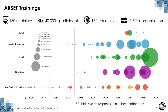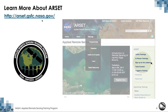Here is an overview of ARSET's 10 years of trainings. We have trained more than 40,000 participants through more than 150 trainings from 170 countries, and have reached 7,500-plus organizations in the last 10 years. ARSET training participation has increased substantially in recent years. All information and presentation materials are available on the ARSET website, and you can sign up for the ARSET listserv to stay up to date with upcoming trainings.